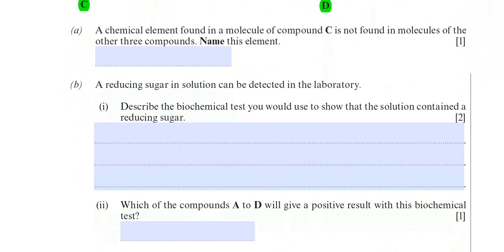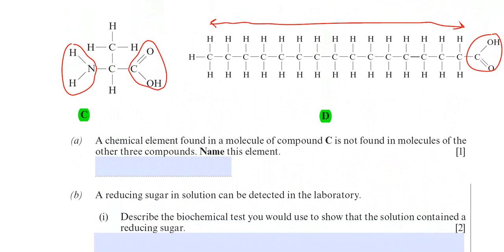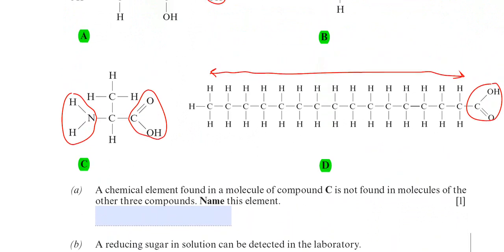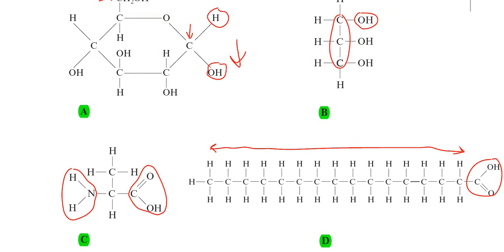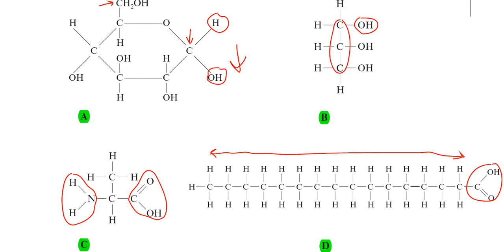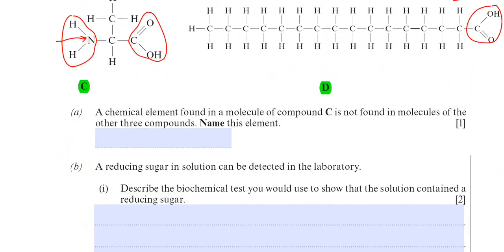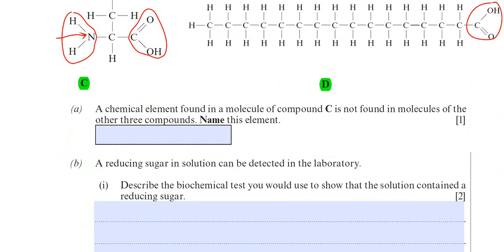Part A asks: a chemical element found in compound C is not found in the other three compounds — name this element. Looking at compound C compared to the others, it has nitrogen in its amino group. Nitrogen is not found in any of the other biological molecules shown, so the answer is nitrogen.